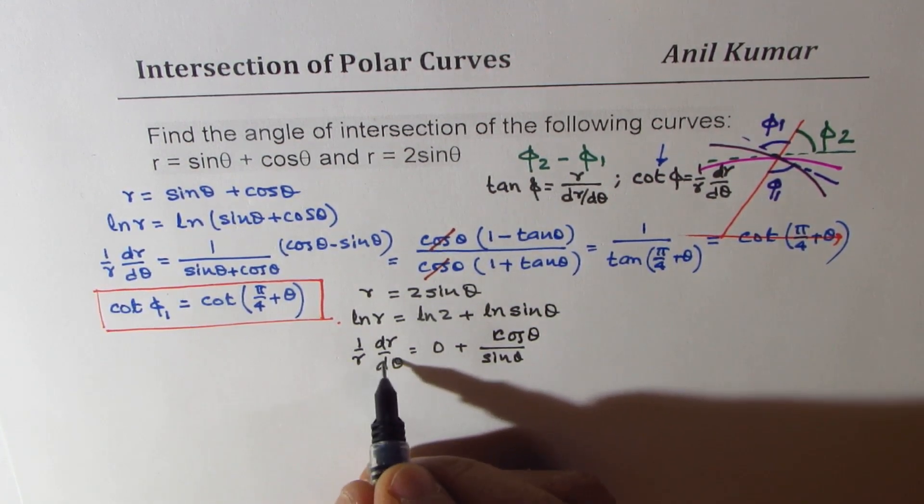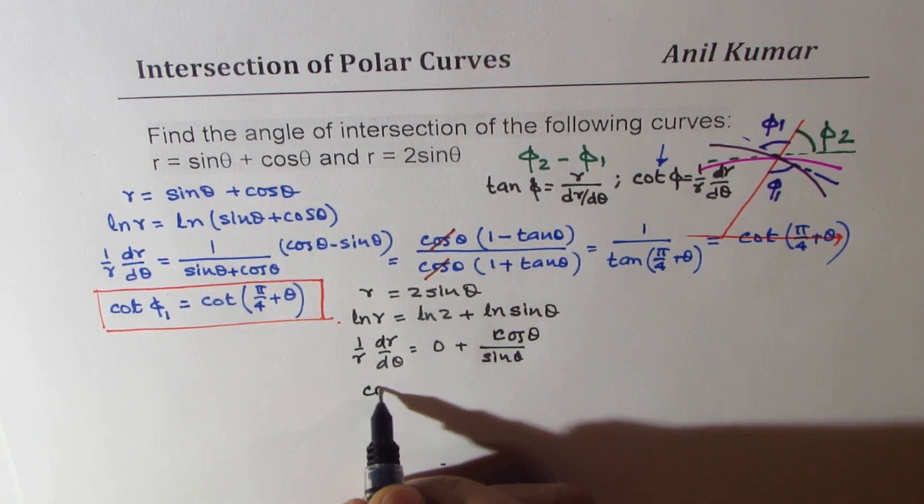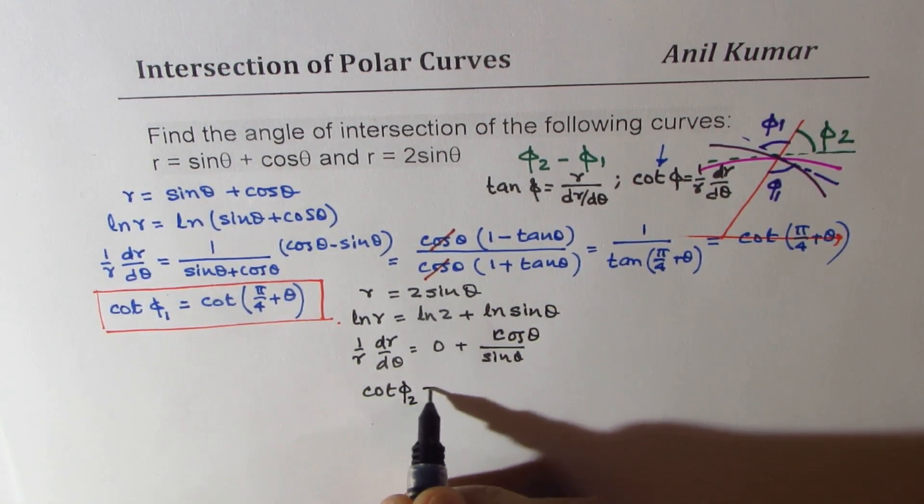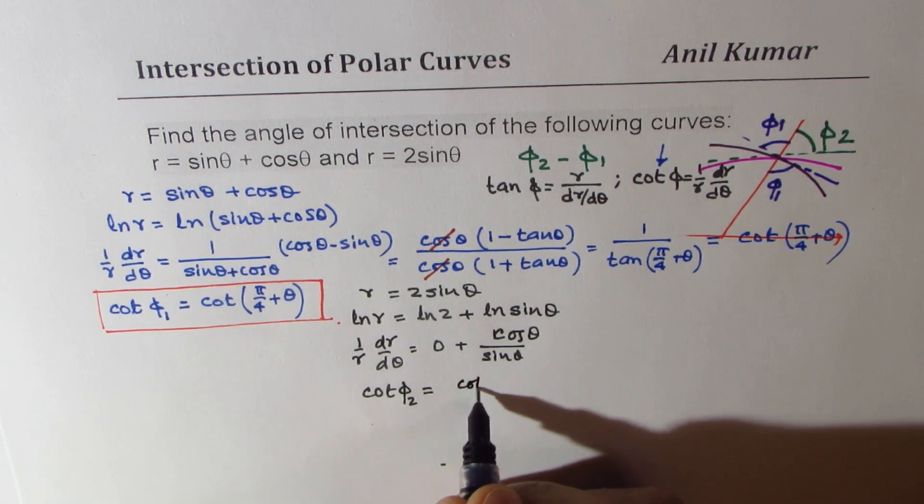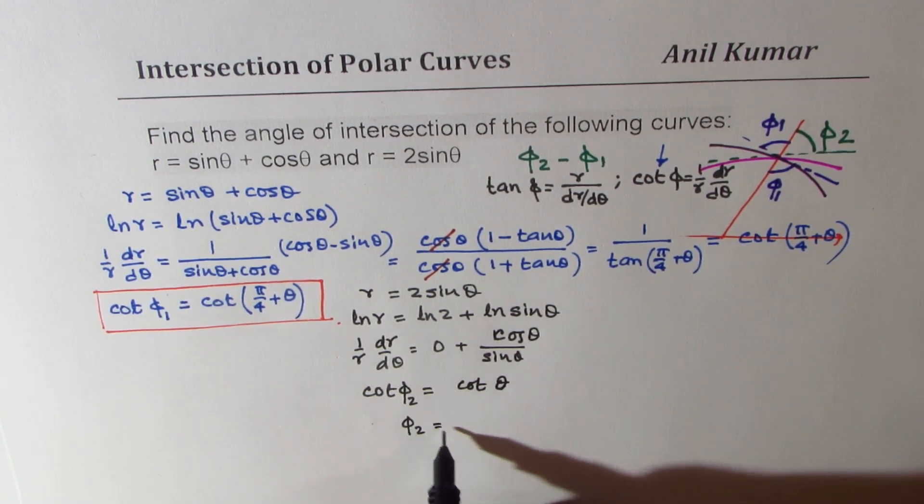So that gives you 1 over r dr d theta. We'll call this as curve 2. So we'll call this as cot phi 2 equals cot theta. And so clearly, phi 2 is theta.